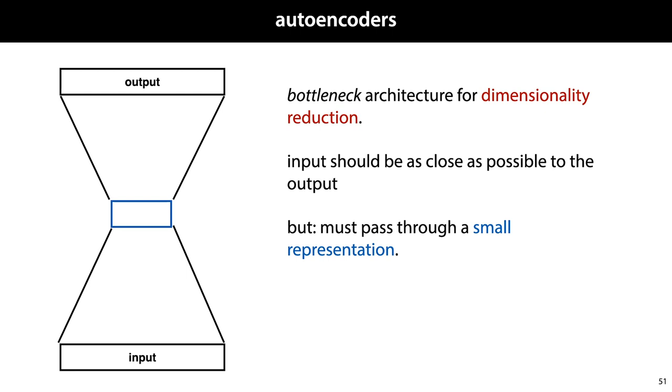Here's what a simple autoencoder looks like. It's a particular type of neural network shaped like an hourglass. Its job is just to make the output as close to the input as possible. But somewhere in the network, there is a small layer that functions as a bottleneck.